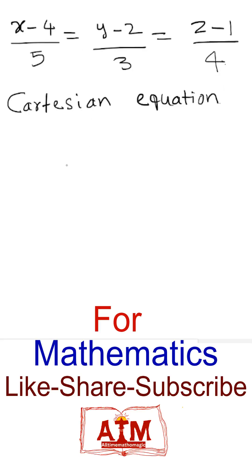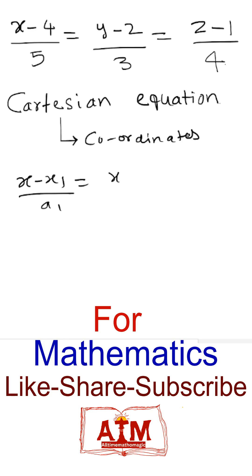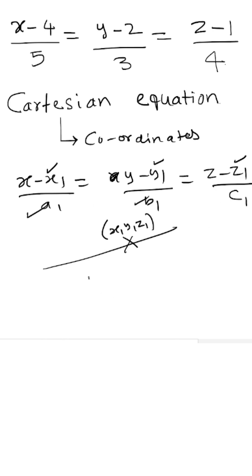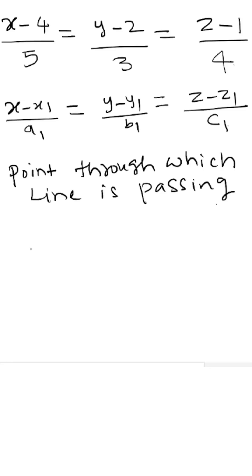This is the equation of a straight line, called the Cartesian equation: (x - x1)/a1 = (y - y1)/b1 = (z - z1)/c1. Here, x1, y1, and z1 are the coordinates of the point through which the line is passing, and a1, b1, c1 are the direction ratios of the given line. An equation that uses coordinates along with direction ratios is called a Cartesian equation.